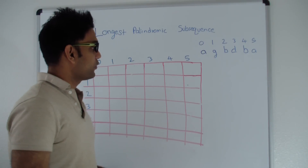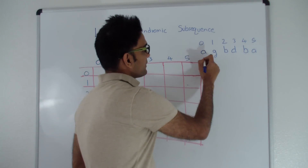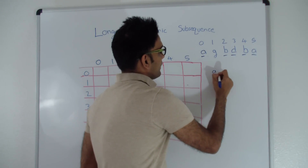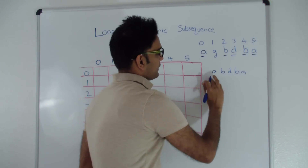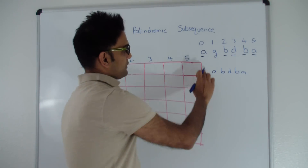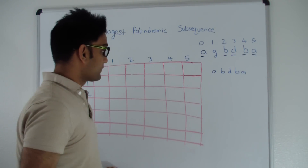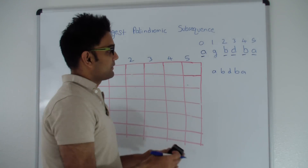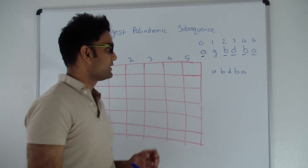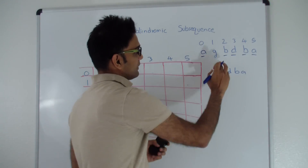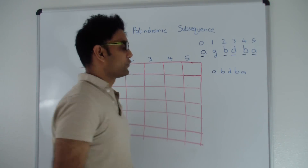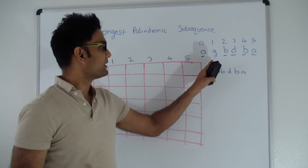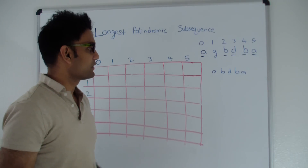In this case, the longest palindromic subsequence is of length 5 and the subsequence is A, B, D, B, A. Notice how this is a palindrome and how it is not continuous in the original string. This question is different from longest palindromic substring where the characters need to be continuous. The longest palindromic substring here will be B, D, B whose length is 3, but we are looking for longest palindromic subsequence whose length is 5, so the characters need not be continuous in the original string.